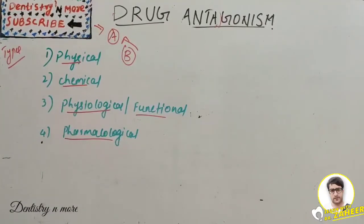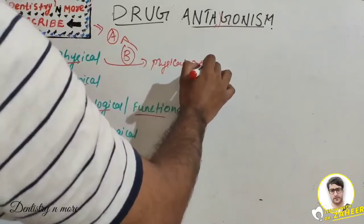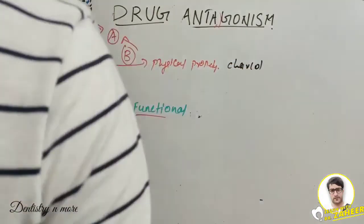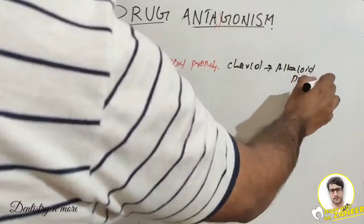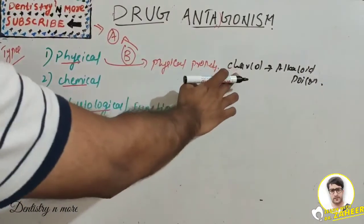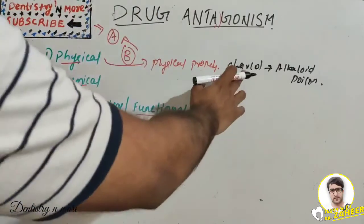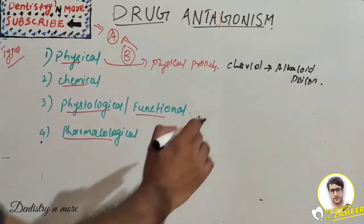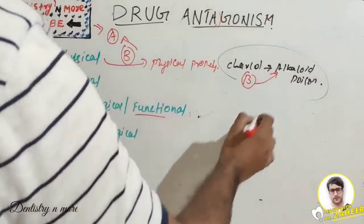In physical antagonism, it is based on the physical property of a drug. For example, charcoal adsorbs alkaloids in cases of alkaloid poisoning. The charcoal acts as an antagonist, reducing the availability of the alkaloid. This is actually beneficial — charcoal can be used as an antidote in poisoning cases, adsorbing the alkaloid and saving the patient.